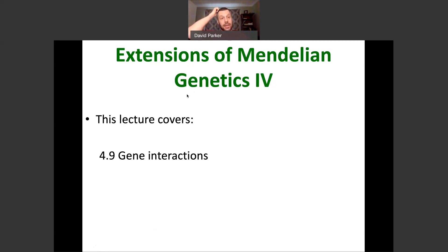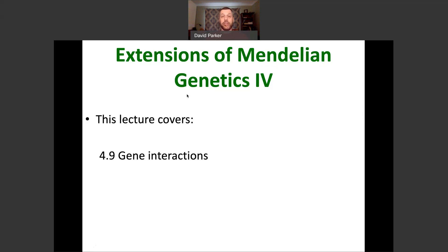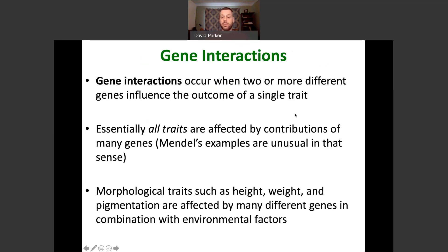What we're going to talk about in this lecture is gene interactions. Now, this is probably the most complicated part of this chapter, so listen up. The important thing to know before we start is that this lecture — the gene interaction section — is now referring to two genes. The other parts of this chapter refer to interesting genetic phenomena that occur with just one gene. Now we're looking at interaction between two separate genes. Gene interactions occur when two or more genes influence the outcome of a single trait.